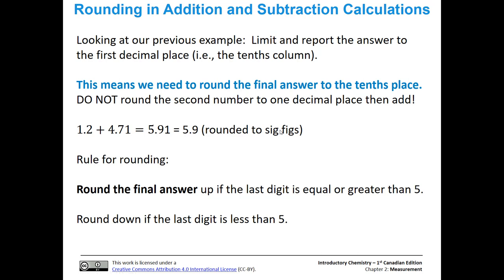We want to round our final answer to the tenths place, and I can't stress this enough — don't round the second number first and then add them together. In this case it would actually work, but there is no guarantee of that, especially with more complicated calculations. So add the numbers as you have them, and then round to the proper number of significant figures or decimal places at the end. The rounding rules: round up if the last digit is equal to or greater than 5, and round down if it's less than 5.